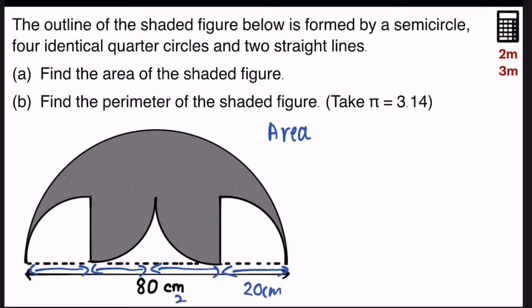Same goes to the middle one, 20, 20, and 20. And since the four small quarter circles are identical, I'm going to do a shift by moving this quarter circle to this part.